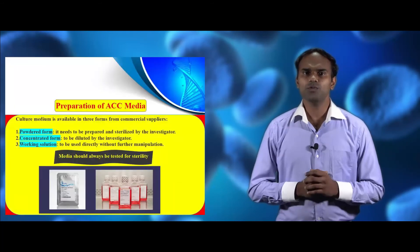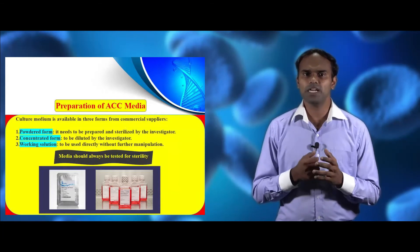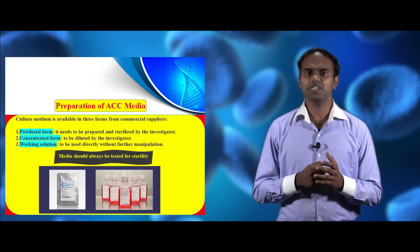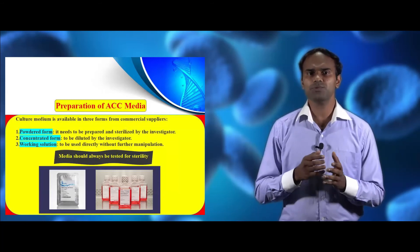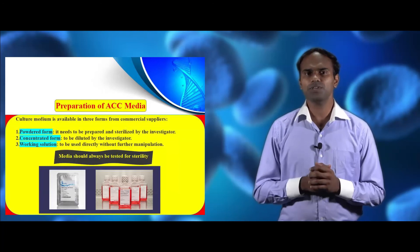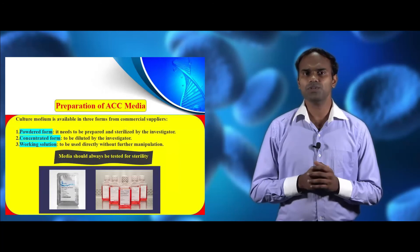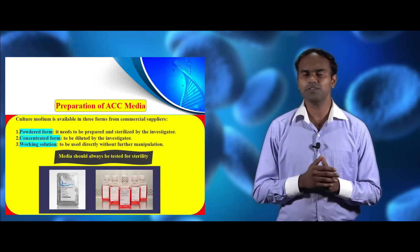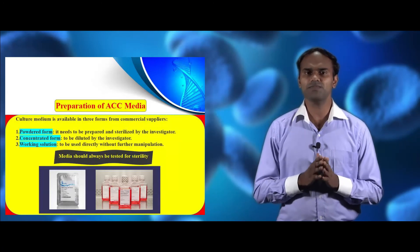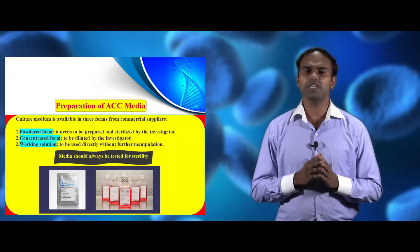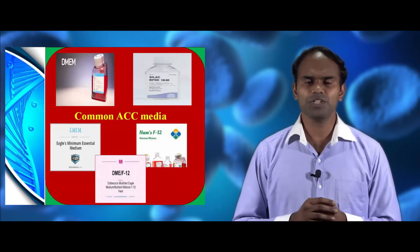Now we see about the preparation of animal cell culture media. One can manually prepare the media, or it is commercially available in three forms: powder form, which has to be prepared and autoclaved; concentration form, which needs to be diluted; and working solution, which does not need any dilution and can be directly used. Most importantly, the media should be tested for sterility before doing any cell culture experiments.